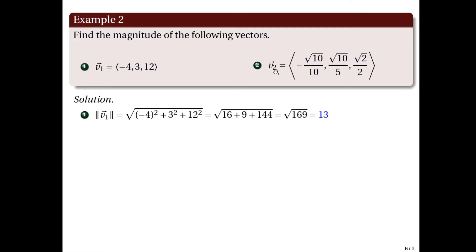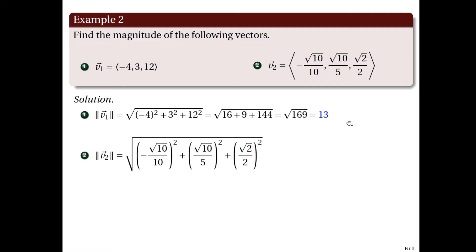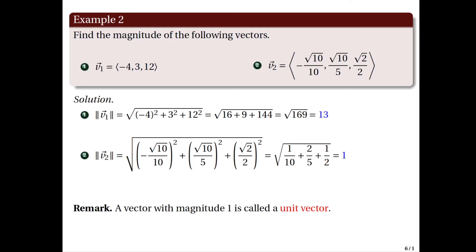Now let's look at another vector v2 with components negative square root of 10 over 10, square root of 10 over 5, square root of 2 over 2. The magnitude of v2 will be the square root of the sum of the squares of the components. So it is the square root of 1 over 10 plus 2 fifths plus 1 half, which gives us 1. Now a vector whose magnitude is 1 is a very special vector, which we will call a unit vector.